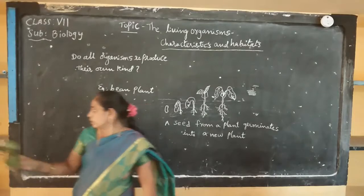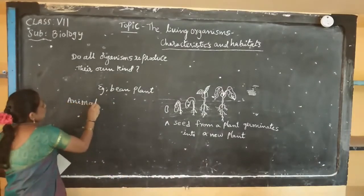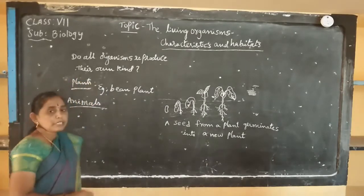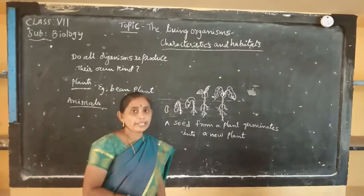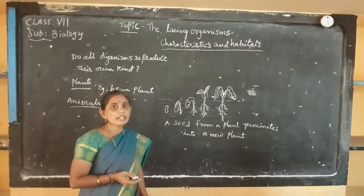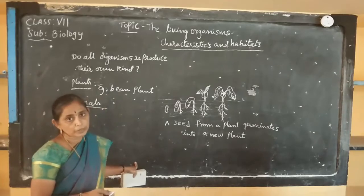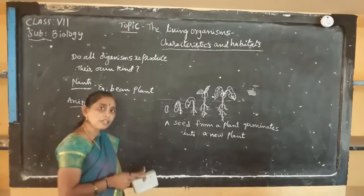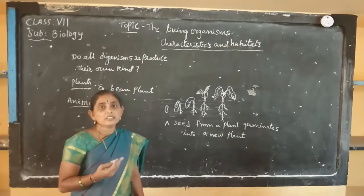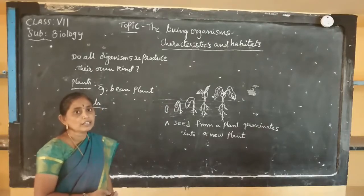Animals also reproduce their own kind, but the mode of reproduction is different. For microorganisms, reproduction is different — there is asexual reproduction, which includes spore formation, fragmentation, and budding. These are the different types of reproduction present in microorganisms.